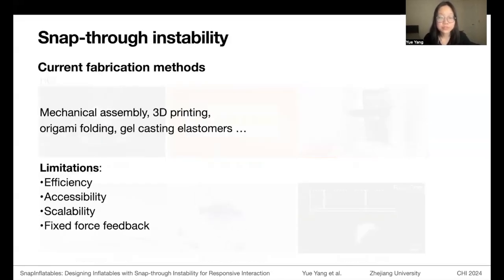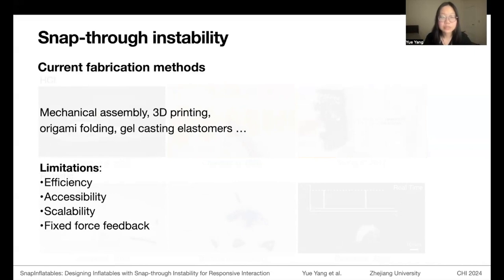Most structures with snap-through instability are created through mechanical assembly, 3D printing, origami folding, or casting elastomers. However, these methods often have limitations in terms of efficiency, accessibility, scalability, and the flexibility of trigger force.